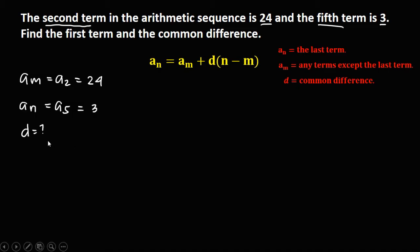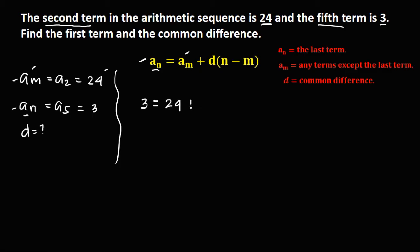To solve for the common difference using this formula, substitute these values. So a sub n equals 3, then equals a sub m which is 24, plus d — that's the common difference, the unknown — times n. Since a sub n equals a sub 5, n equals 5. Then minus m: since a sub m equals a sub 2, m equals 2, so minus 2.